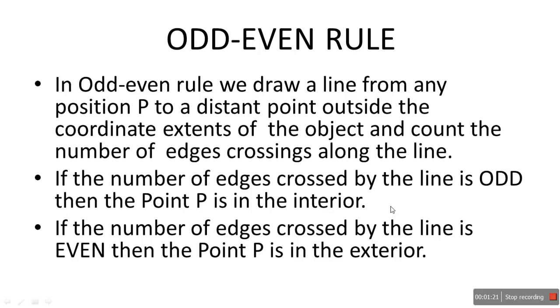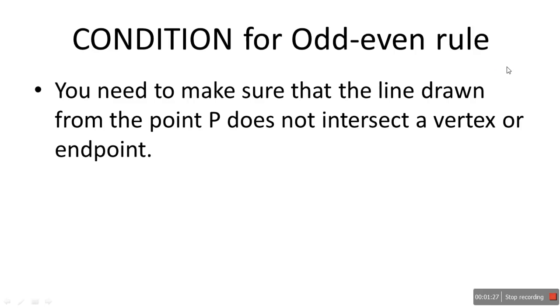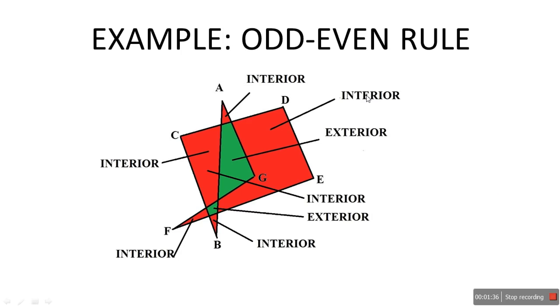There is one condition for the odd-even rule that you need to follow: you need to make sure that the line drawn from point P does not intersect a vertex or an endpoint. That is the only condition.